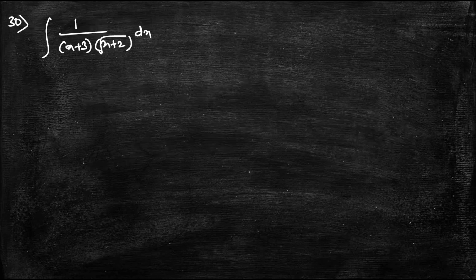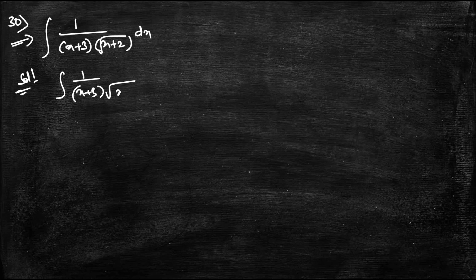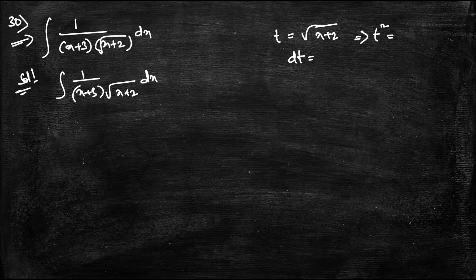Question 30: The given integral is ∫1/((x+3)·√(x+2)) dx. I take t = √(x+2), so t² = x+2, and differentiating gives 2t dt = dx.